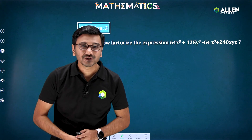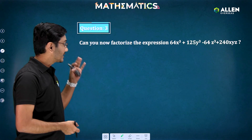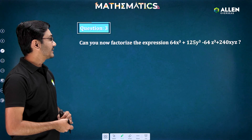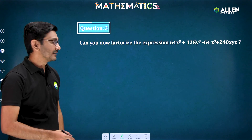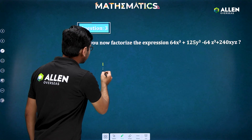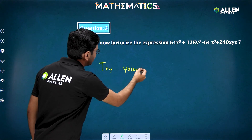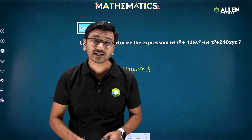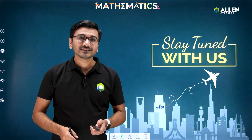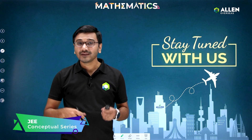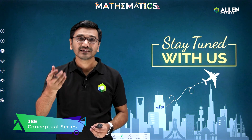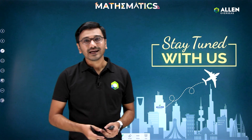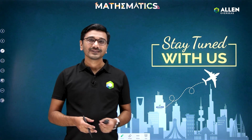Now it's time for a homework question. Try to factorize: 64x³ + 125y³ − 64z³ + 240xyz. Don't forget to give your answers in the comment box so that we can revert to you very soon. That's all on this special factorization formula. If you have any queries or doubts, ask them in the comment box and we'll revert within 24 hours. Stay tuned with Allen Overseas for more such videos on JEE. Thank you.